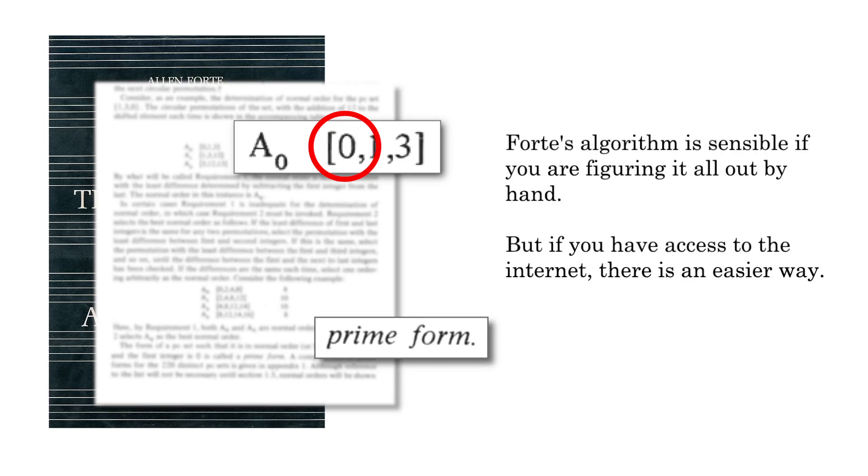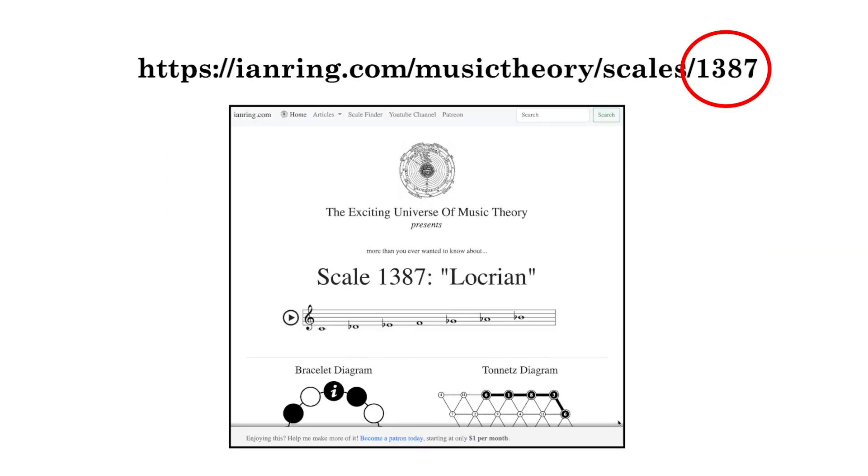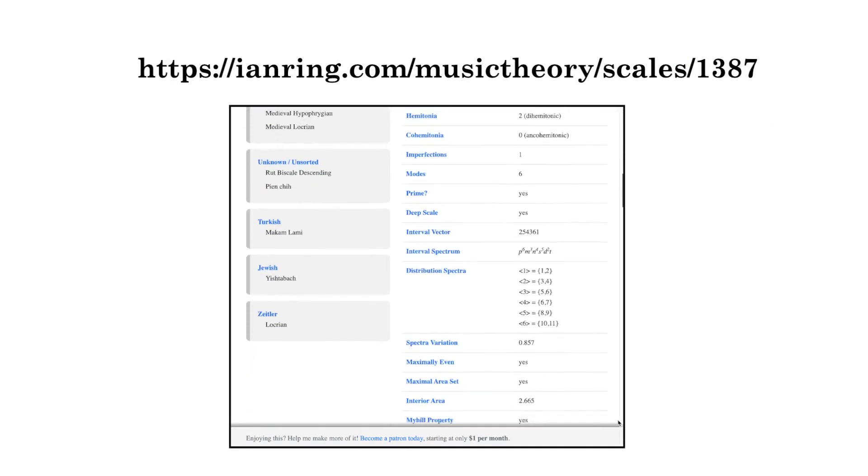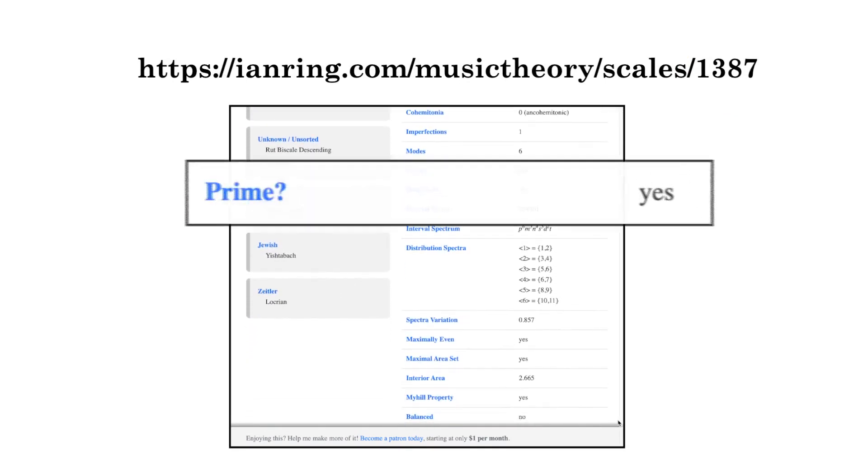Forte's algorithm is sensible if you are figuring it all out by hand, but if you have access to the internet, there is an easier way. Go to ianring.com slash music theory slash scales slash and then the number of your scale. Scroll down to read all the detailed information, and there you can see whether a scale is prime or not.